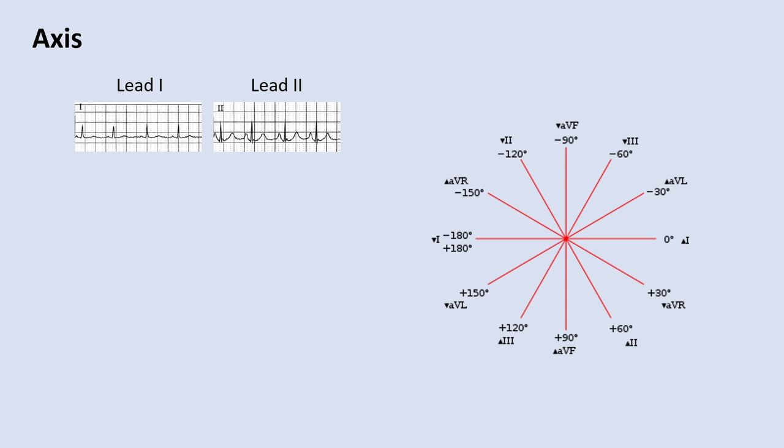Basically, you just want to look for where the QRS complexes are upright. If you see an upright QRS complex in both lead 1 and lead 2, give two thumbs up — that's a normal axis. Lead 1 is your left hand and lead 2 is your right hand. So lead 1 positive, lead 2 positive, and the overlap is in the middle, indicating normal axis.